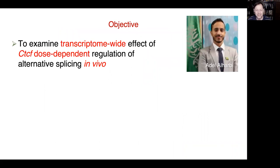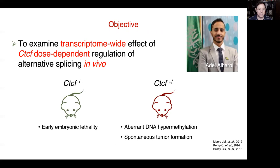I want to highlight the work of a very gifted PhD student in our laboratory, Adele Alabi from Saudi Arabia. His particular experiment examines transcriptome-wide effects of CTCF dose dependency in regulating alternative splicing in vivo. To do that, we used our favorite mouse model: the CTCF nullizygous mouse model. CTCF null mice are embryonic lethal because cells can only survive one or two cell divisions based on residual protein. In the heterozygous mice, we know they feature spontaneous tumor formation when moderately aged, partly due to aberrant DNA hypermethylation.